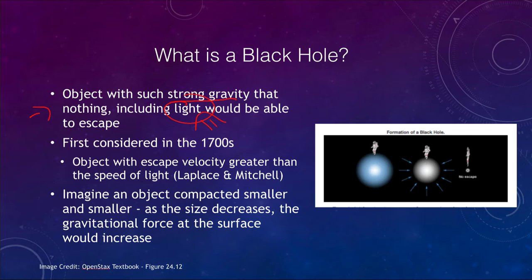These ideas were actually considered as far back as the 1700s. We had the concept of a black hole as just an object with an escape velocity greater than the speed of light. Those were proposed by Laplace and Mitchell, two different astronomers and scientists of the time, who came up with the idea long before an understanding of general relativity or anything else that would be needed.